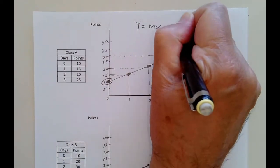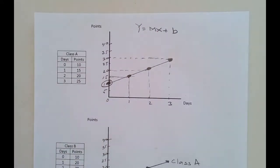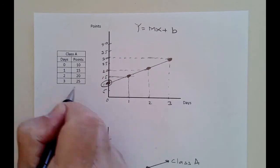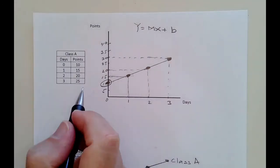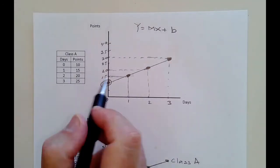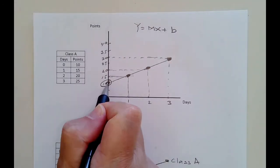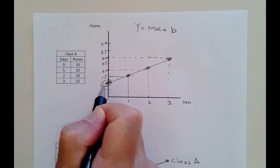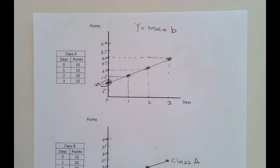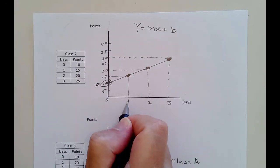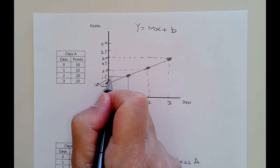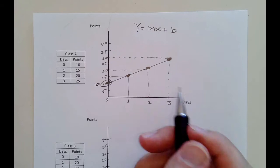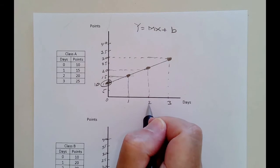We took this data for class A and took the starting point. At zero days, we have 10 points. Then one day come to class, you get 15 points, which is an increase of 5. You come a second day, you also get 5 more points.